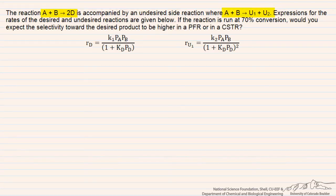In this problem, we have two parallel reactions leading to desired product versus undesired products, and we want to determine whether we would achieve a higher selectivity to the desired product in a PFR or CSTR, and we're going to a conversion of 70% of our reactants.